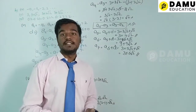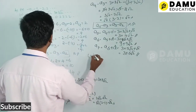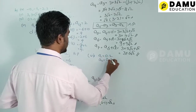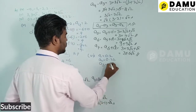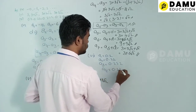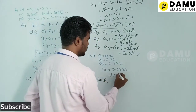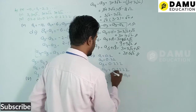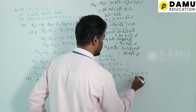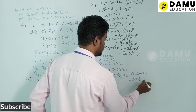For the sixth series: a1 = 0.2, a2 = 0.22, a3 = 0.222, a4 = 0.2222. The common difference d = a2 − a1 = 0.22 − 0.2 = 0.02.